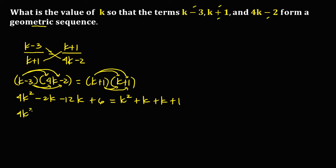Combining like terms: on the left side we have 4k squared, then negative 2k and negative 12k gives negative 14k, plus 6. On the right side we have k squared, then k plus k gives positive 2k, plus 1.